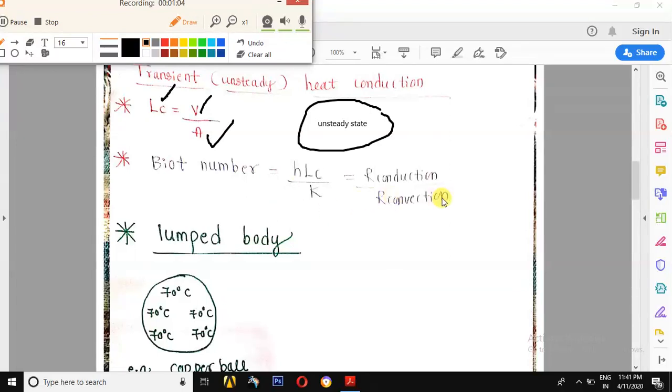Biot number is internal conductive resistance to the external convective resistance and is given by HLC by K.